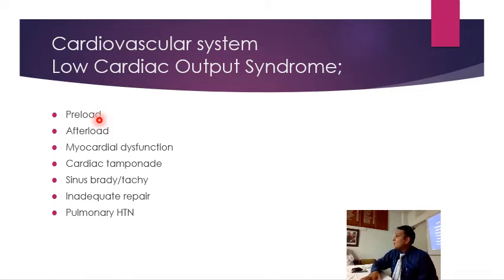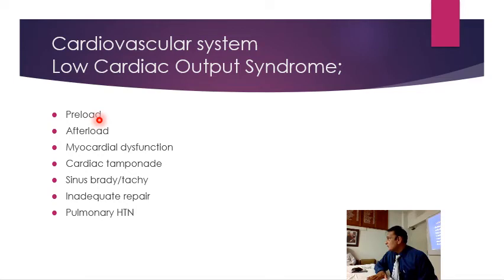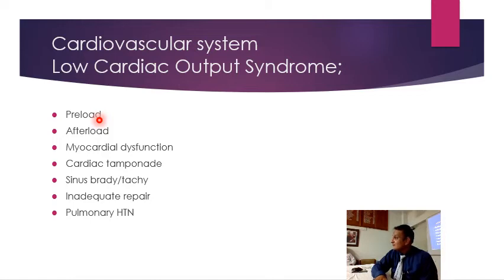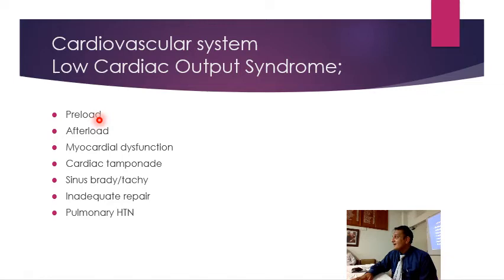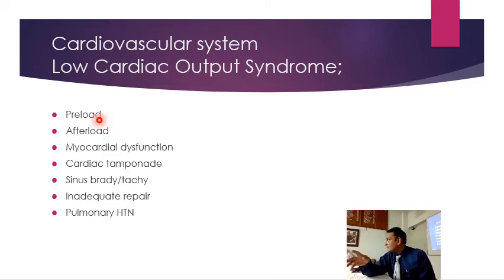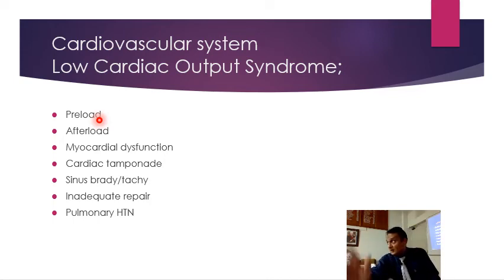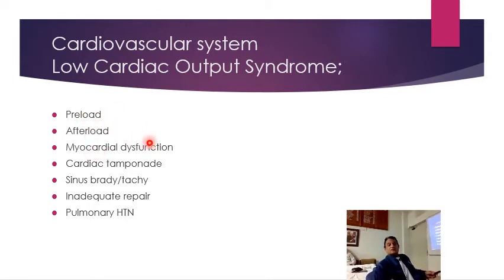Normally we extubate the patient first and then start weaning inotropes. Don't touch inotropes first — get the patient extubated, then start weaning inotropes the next day. Inotropes are usually started by the surgeon in the OR, so you should not touch them if there is low cardiac output and the tube is still in place.